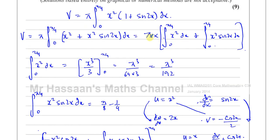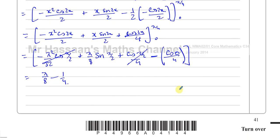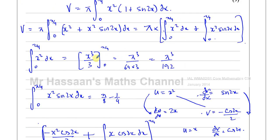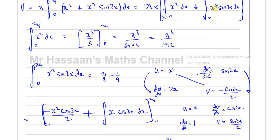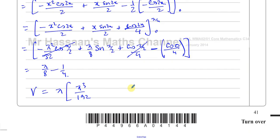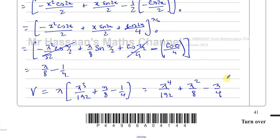So the volume is pi times (pi cubed over 192 plus pi over 8 minus 1/4). This gives the final answer: v equals pi to the power of 4 over 192 plus pi squared over 8 minus pi over 4 cubic units.